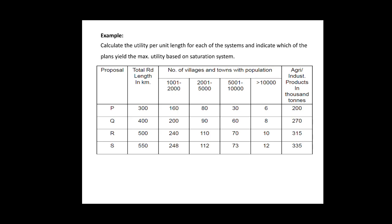The number of villages and towns with population range 1000 to 2000 coming across proposal P with total road length 300 km is 160 numbers.